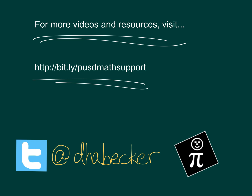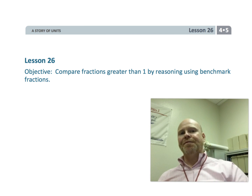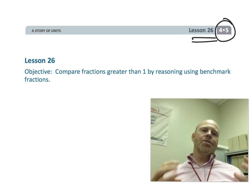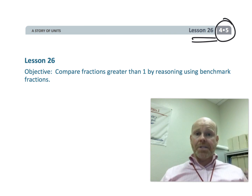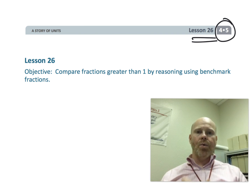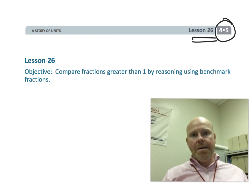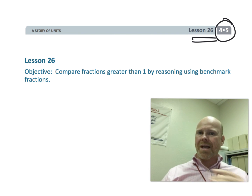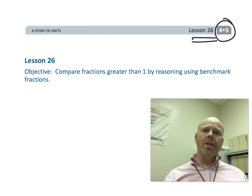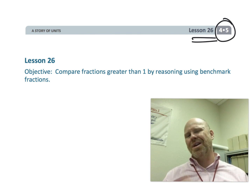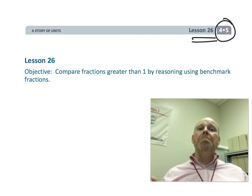This is fourth grade module 5 lesson 26. Students are going to take what they've learned about improper fractions and mixed numbers and how to convert between the two, and use that information to compare a variety of numbers — some improper fractions, some mixed numbers. We're going to use an informal technique based in number sense, thinking about where numbers live on the number line, rather than the standard algorithm of finding a common denominator.